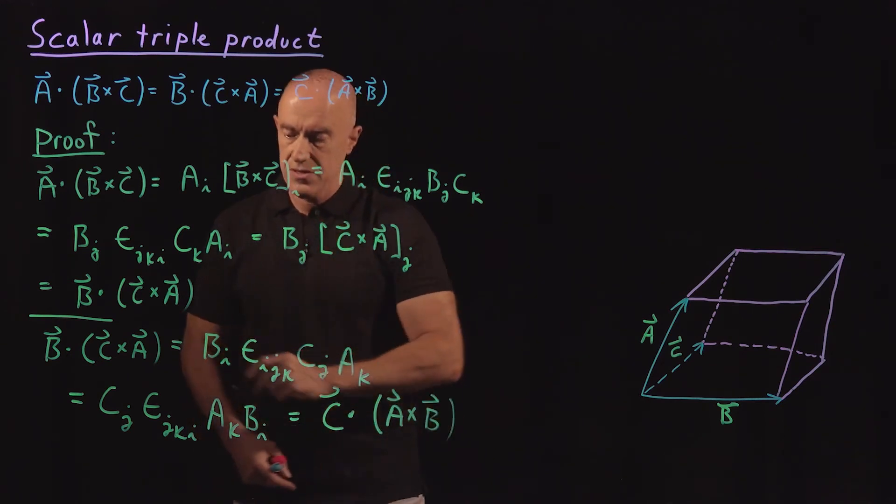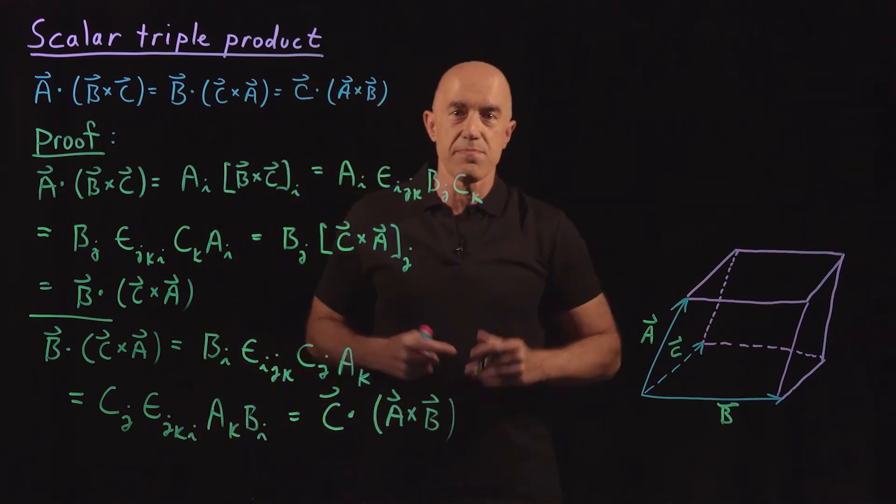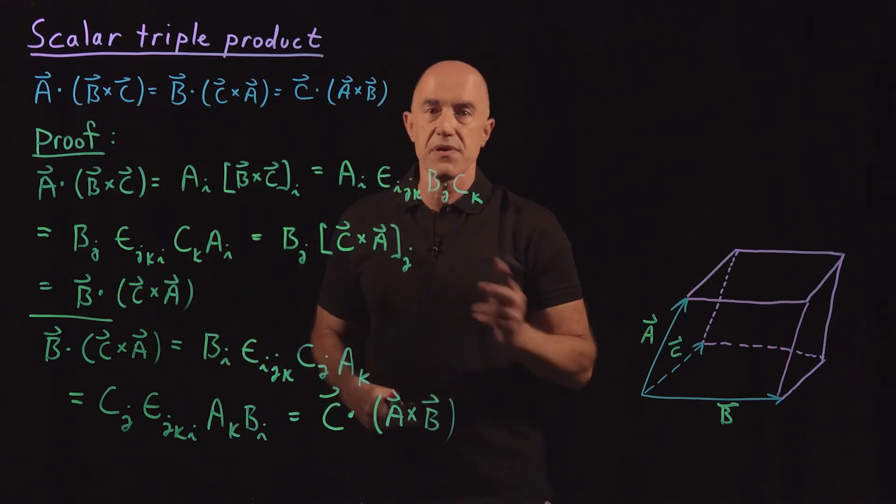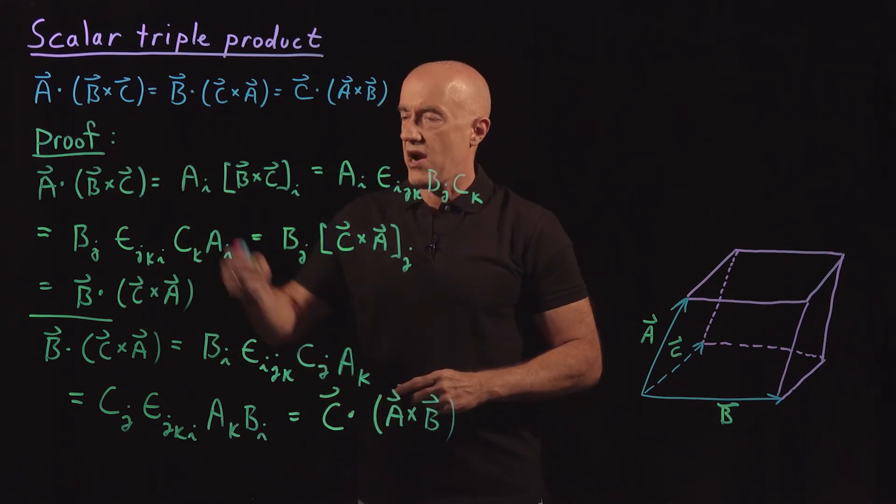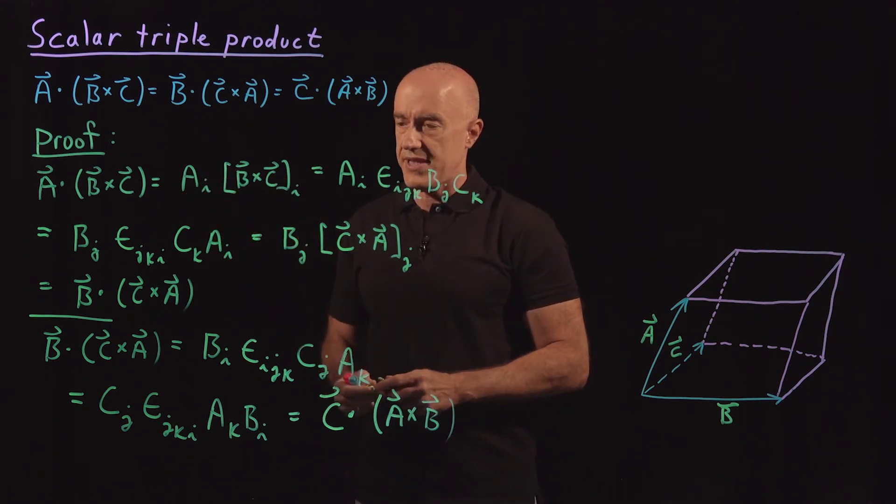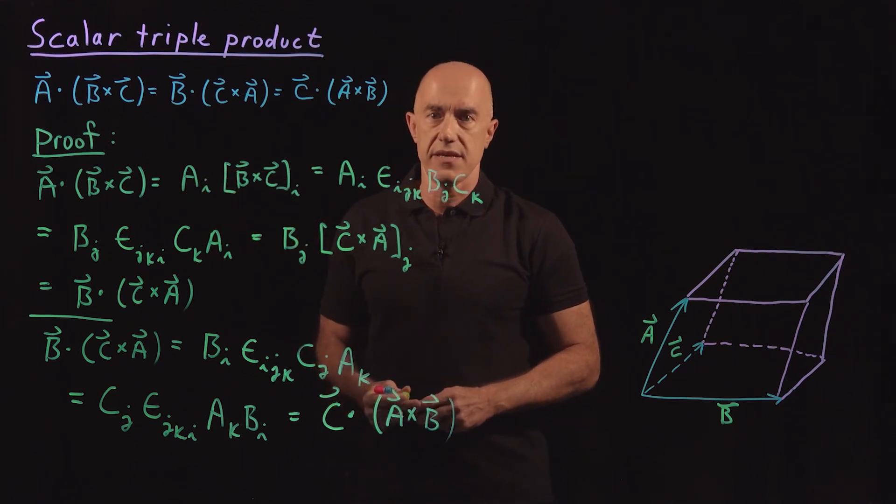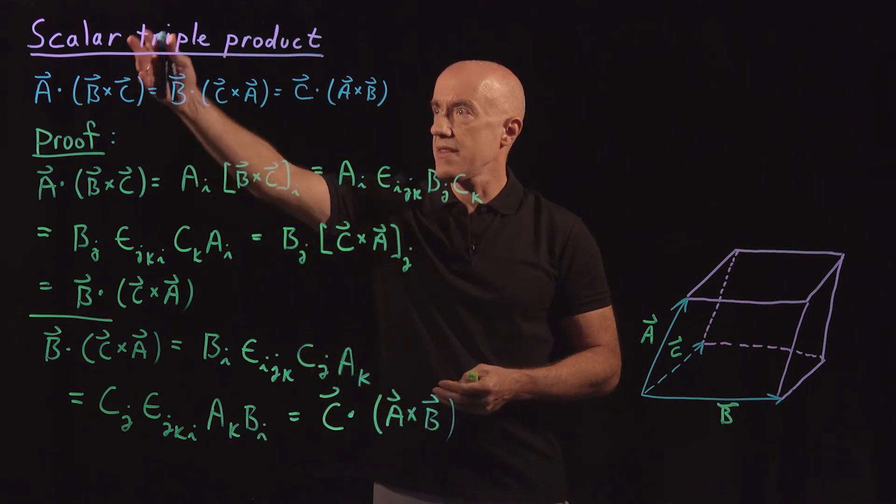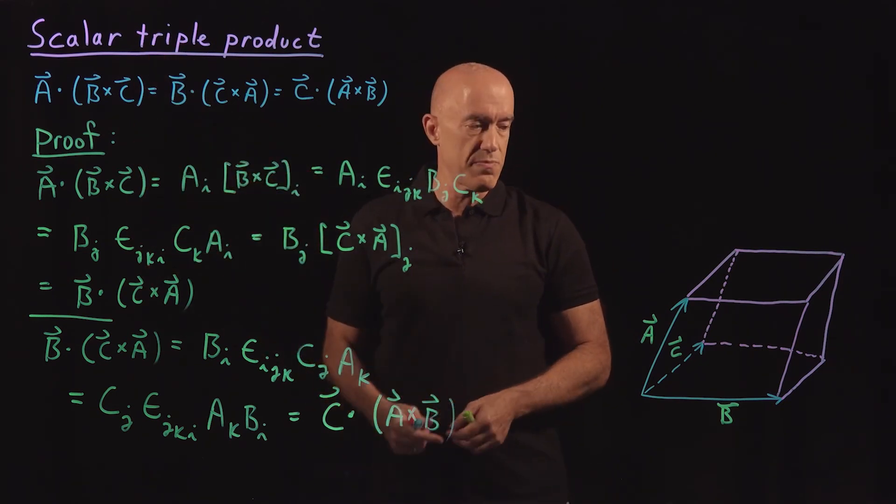So I would jump, I would skip another step. So that's how I would typically prove this. Here I make it, add a couple of extra steps so that you can see what I'm doing. That's the proof of the scalar triple product.